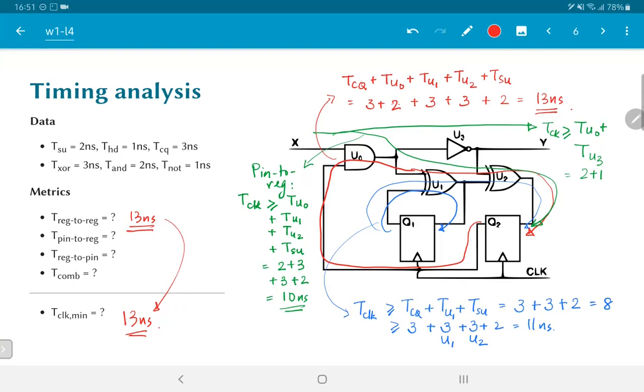So, 13 nanoseconds basically implies a frequency, which is 1 over 13 nanoseconds, which is approximately 70 or so megahertz. 10 nanoseconds would have corresponded to 100 megahertz. 13 nanoseconds is essentially 1000 divided by 13 megahertz, because a nanosecond is 10 to the power of minus 9 seconds. So, this is the way in which we can find out the speed at which a circuit can operate.